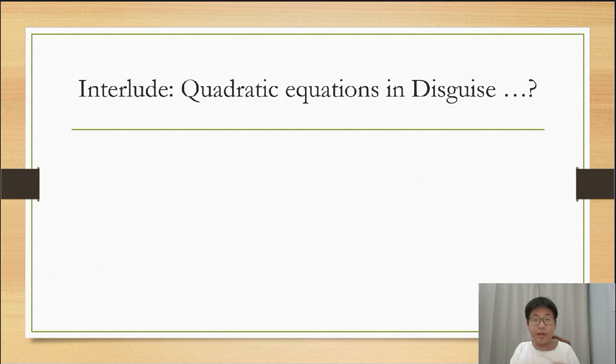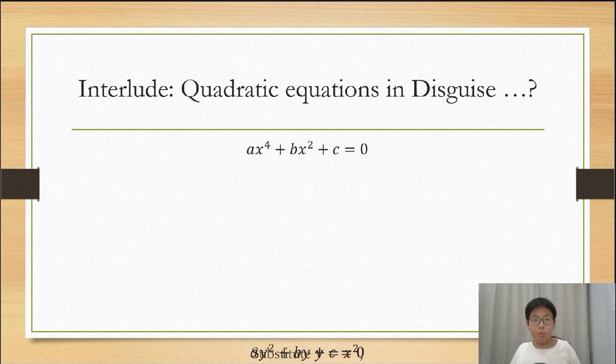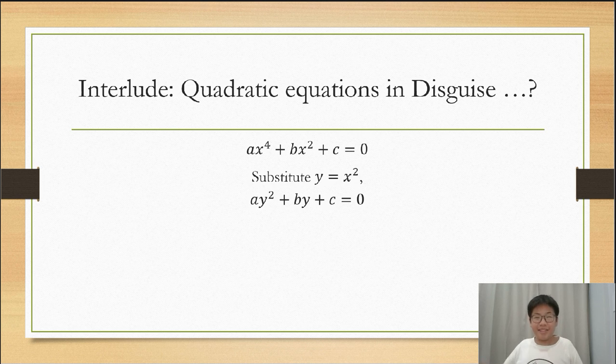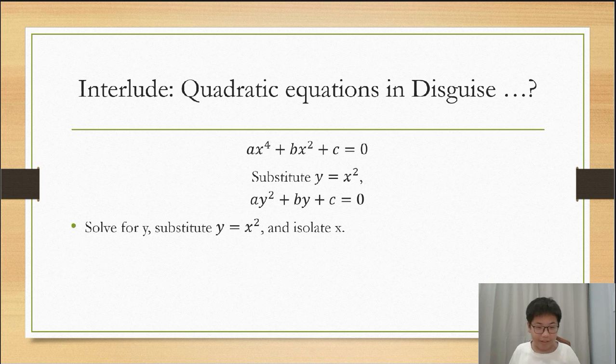And now for quadratic equations in disguise. Some equations are just quadratics but you might not see that at first. Take the equation ax⁴ plus bx² plus c equals 0. It looks like a quartic, but if you substitute y equals x², hey, it's a quadratic! Then solve the quadratic of y, substitute y to x², and isolate x. There, you have the values of x. More complicated substitutions also work this way.